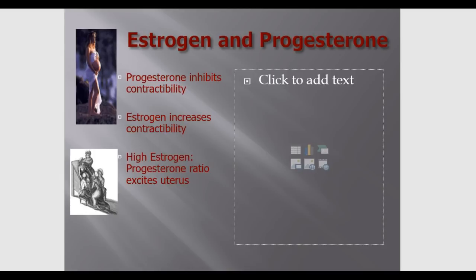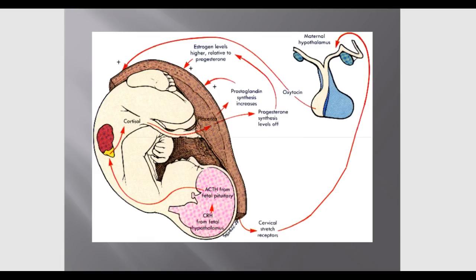To summarize: progesterone maintains pregnancy and inhibits contractility, while estrogen increases contractility. As mom comes closer to term, there is a shift — progesterone decreases and estrogen increases. A high estrogen and low progesterone ratio will excite the uterus and cause uterine contractility. The fetal steroidal theory shows substances released by the fetal adrenal glands act as precursors to prostaglandins, causing more prostaglandins to be secreted.